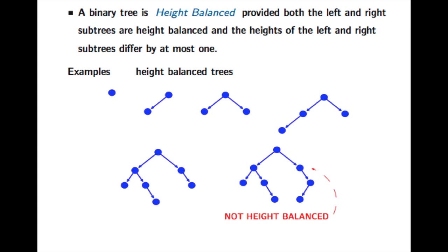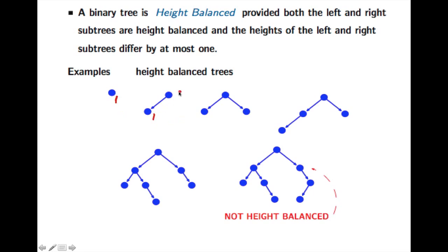We also want the left subtree and the right subtree to be height-balanced themselves. So what do we have here as examples? Here is a tree of depth one. Here is a tree of depth two, and the two subtrees here of height one and here of height zero differ by at most one.